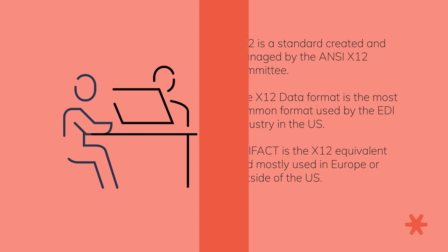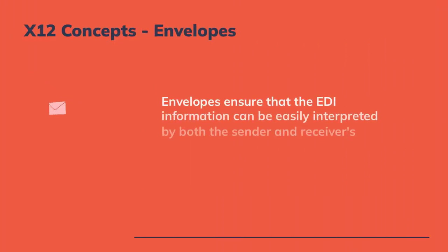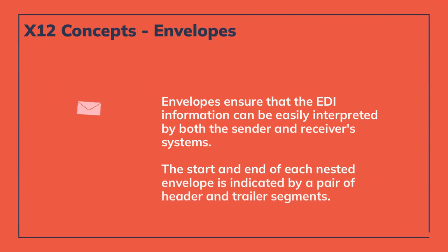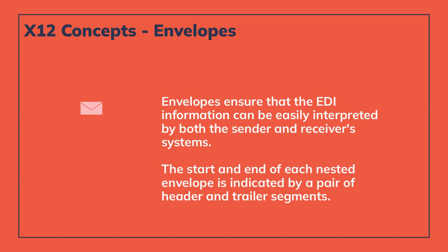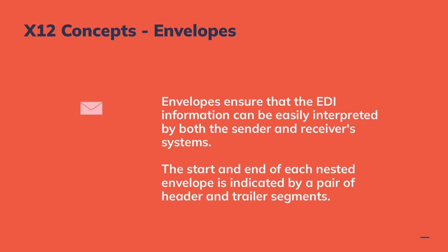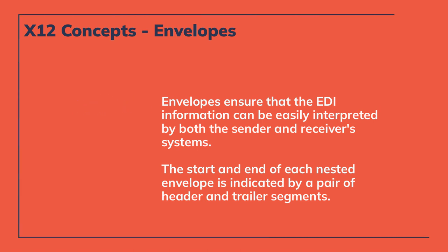In order to provide structure and to facilitate the proper handling of data, an X12 file is organized into several nested envelopes. These envelopes ensure that the EDI information can be easily interpreted by both the sender and receiver systems. The start and end of each nested envelope is indicated by a pair of header and trailer segments.